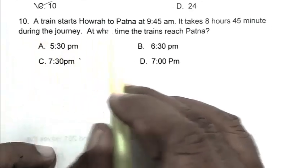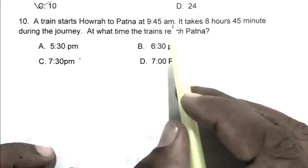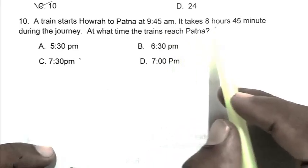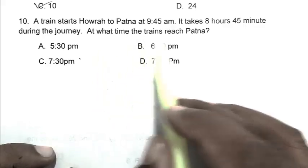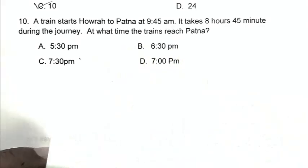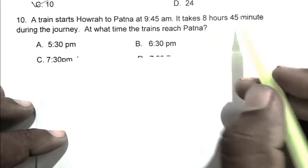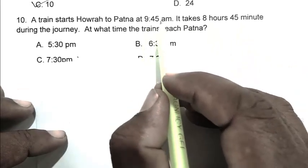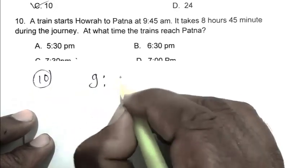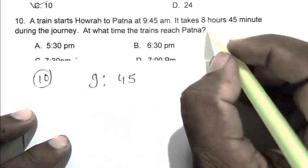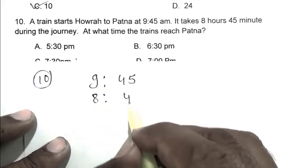Question number ten: A train starts from Howrah to Patna at 9:45 am. It takes 8 hours 45 minutes during the journey. At what time does the train reach Patna? We have to add 8 hours 45 minutes with 9:45 am.